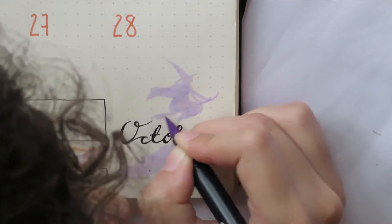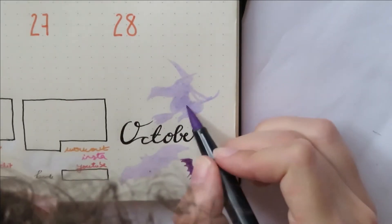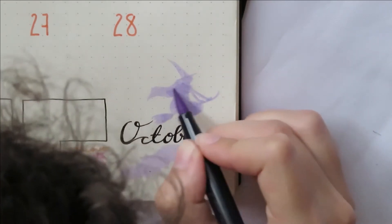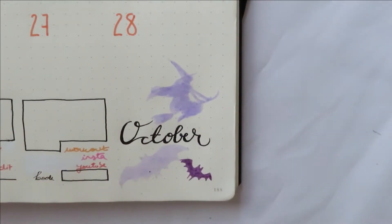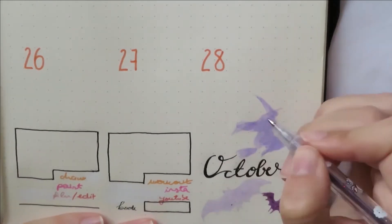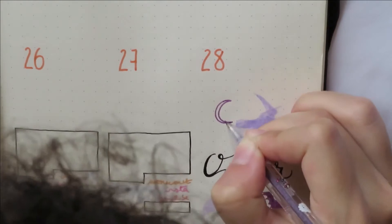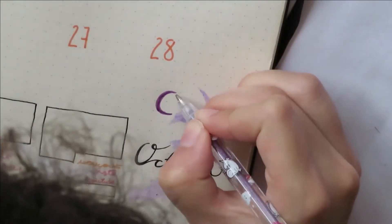Right now I'm using the Tumble Brush Pen to fill in the witch's silhouette. And now I'm using a sparkly purplish pen to draw a moon and a couple of stars.